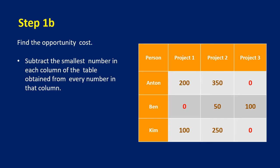Next is Step 1B: subtract the smallest number in each column of the table obtained from Step 1A from every number in that column. For column one, the smallest number is already 0, so column one stays as is. For project two, the smallest number is 50, so you subtract 50 from all numbers in that column — this becomes 300, 0, and 200. For the third column, the smallest number is already 0, so it remains as is.